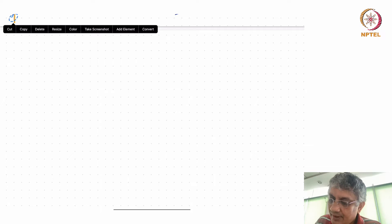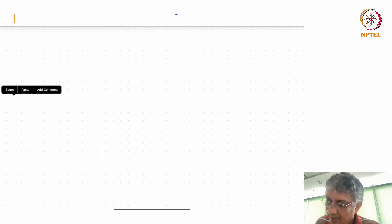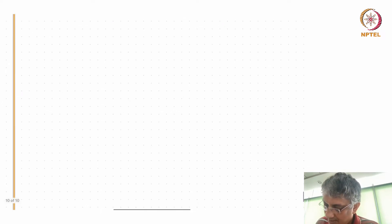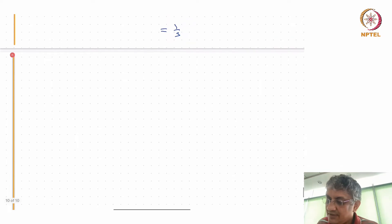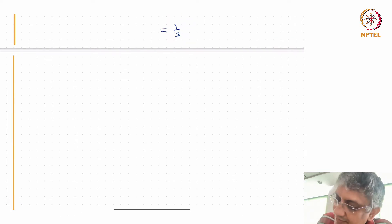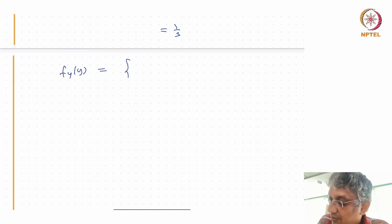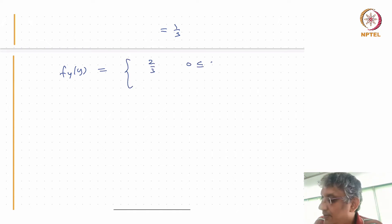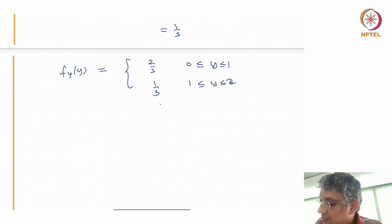So the marginal density of Y is: f_Y(y) = 2/3 when 0 < y < 1, and 1/3 when 1 < y < 2, and 0 otherwise.